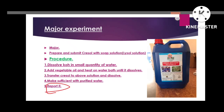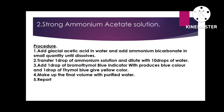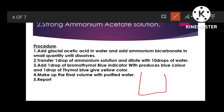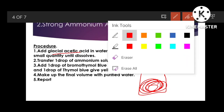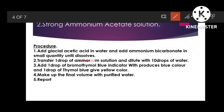For strong ammonium acetate solution: add glacial acetic acid in water, then add ammonium bicarbonate in small quantity and dissolve. First, take glacial acetic acid in a beaker, dissolve in water, then add ammonium bicarbonate and dissolve. After that, transfer one drop of ammonia solution diluted with 10 drops of water into a test tube.